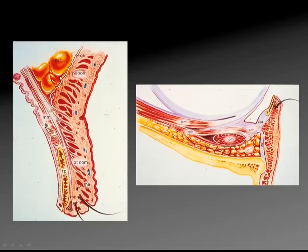This is our orbital septum, coming from the arcus marginalis and inserting onto the levator aponeurosis, which creates our lid crease. And here's our preaponeurotic fat, which is a very important landmark when doing eyelid surgery, because this is going to tell you that you're in the right plane to find that levator aponeurosis just below it.